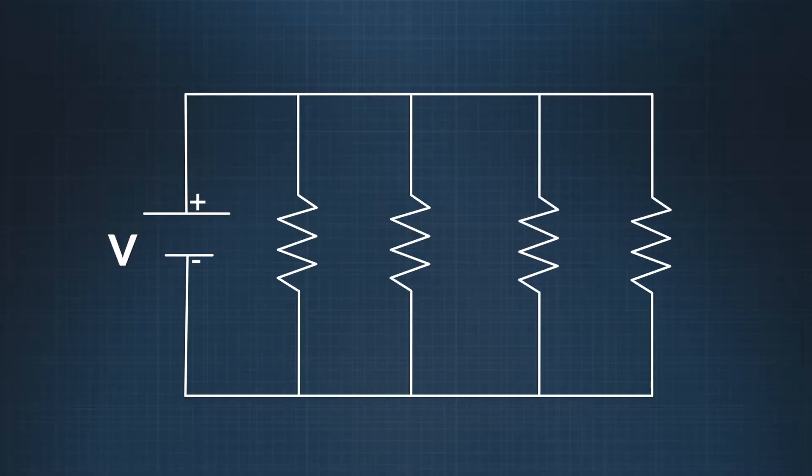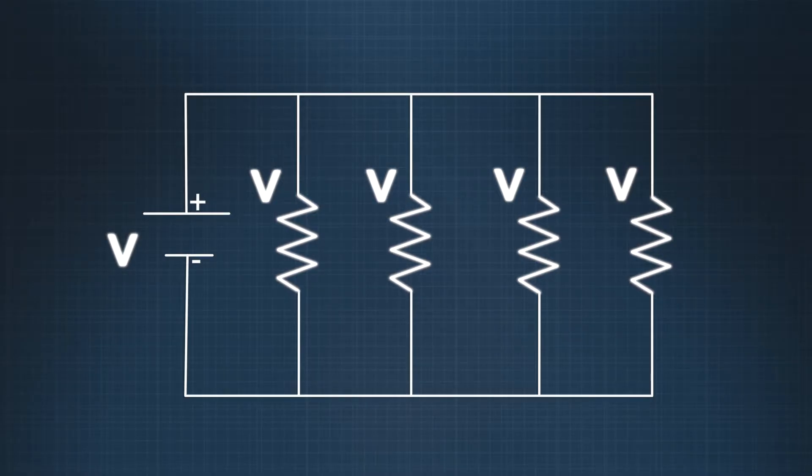But how does the voltage stay the same when there are more bulbs? If we call the potential difference created by the battery V, then all branches of the circuit must expend V volts. So each bulb experiences the full potential difference, V, supplied by the battery.